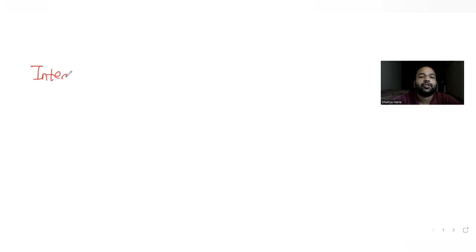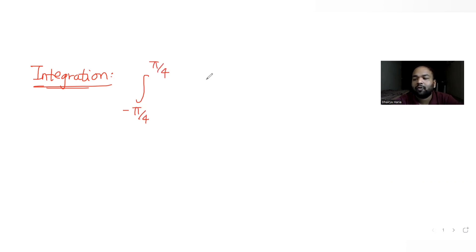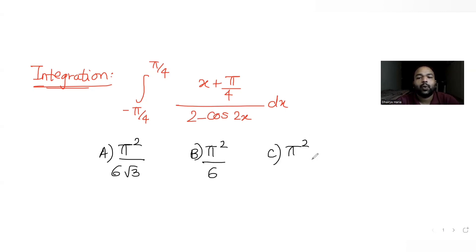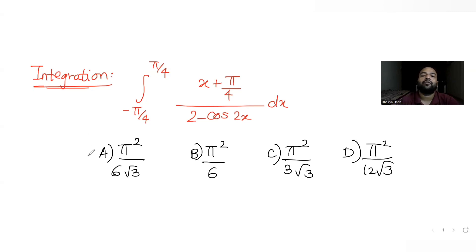Hi guys, I hope you are all doing well. Today's question is from the topic of integration. The question tells us to find the value of the integral with limits from -π/4 to +π/4, where the expression is (x + π/4) / (2 - cos2x) dx. The options given are π²/6√3, π²/6, π²/3√3, and π²/12.